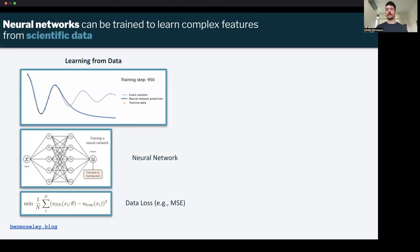Neural networks can be trained to learn complex features from scientific data. Here I'm showing a simple problem where we take input data, pass it through a network, and compare the output prediction to ground truth values. This allows us to compute a loss or supervised loss, and then we can use this loss to optimize the weights of the neural network so that we can make better predictions.